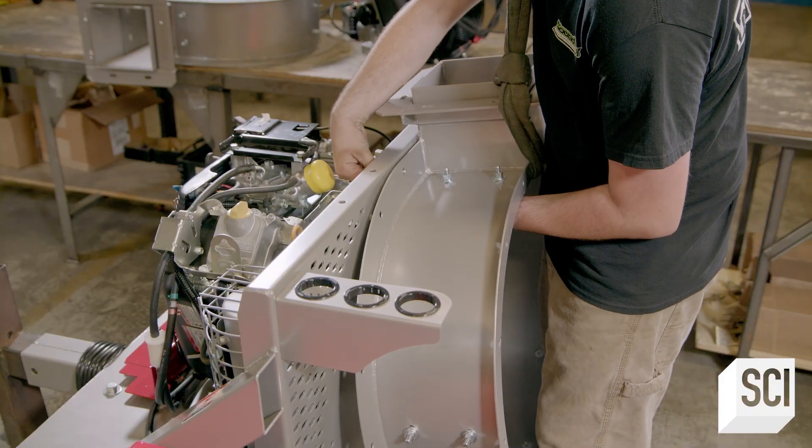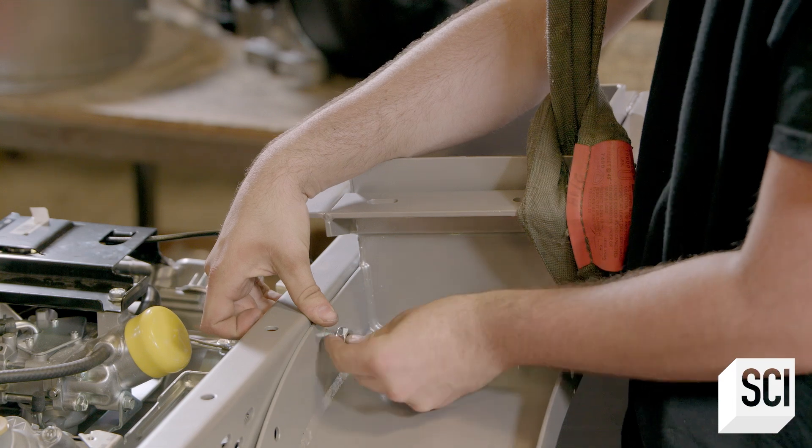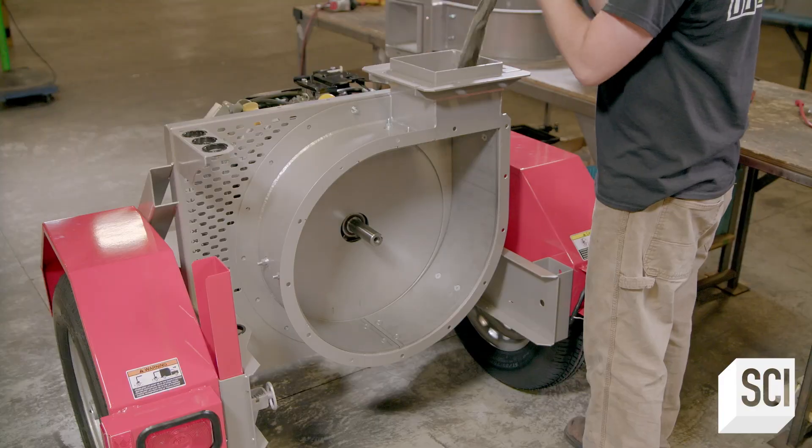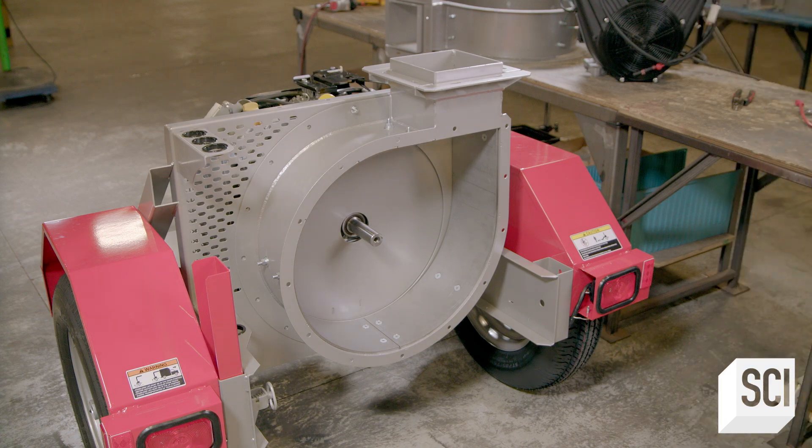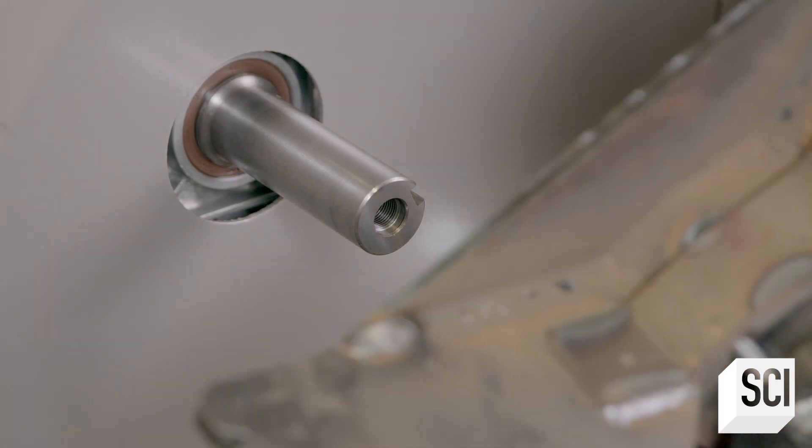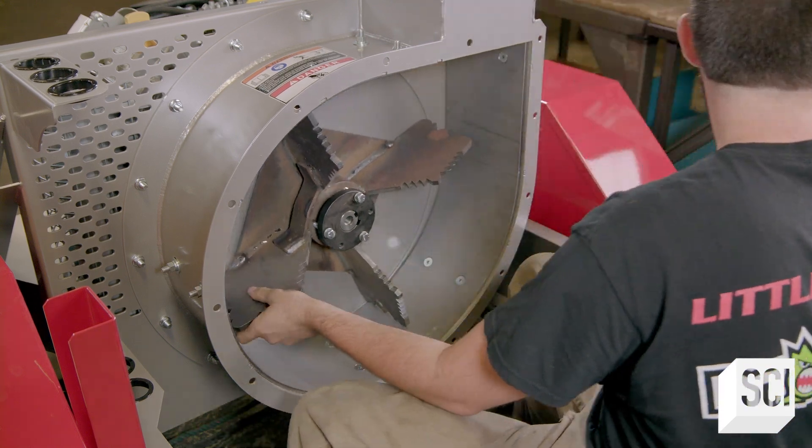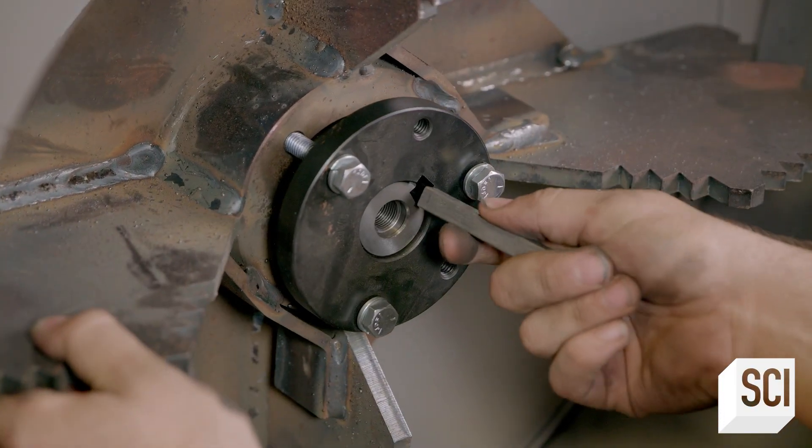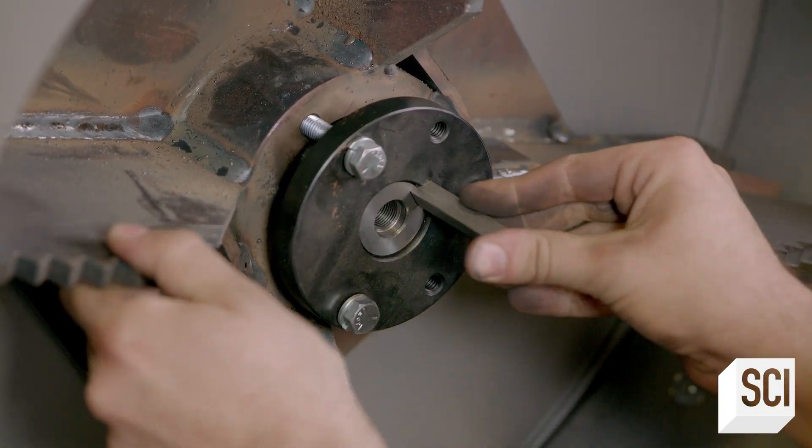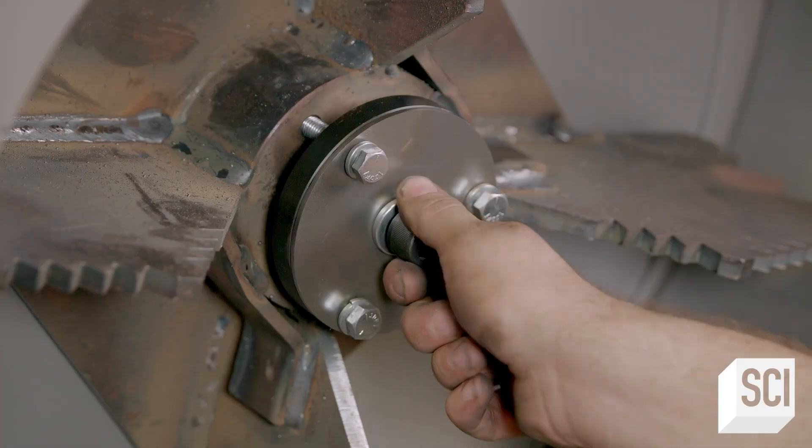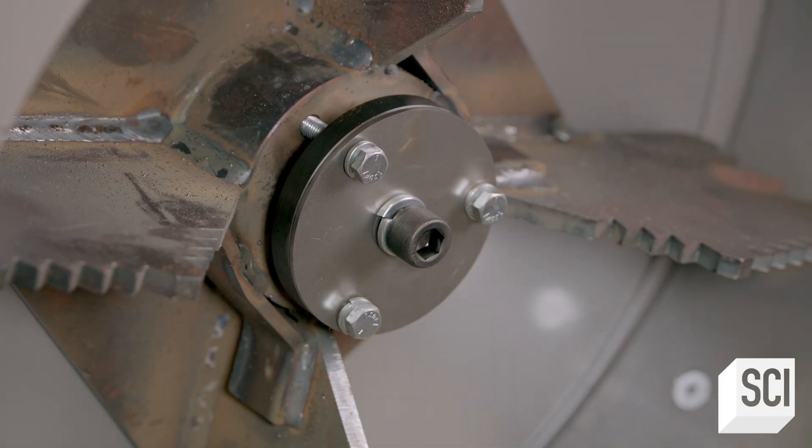He bolts the impeller housing, which has been painted, to the faceplate. The technician installs the impeller on the crankshaft with the shear key. Then, he bolts a protective steel cover plate and attaches everything with a central bolt.